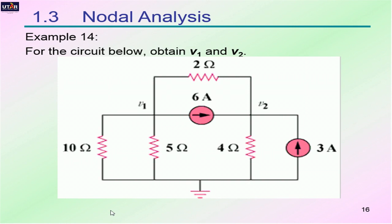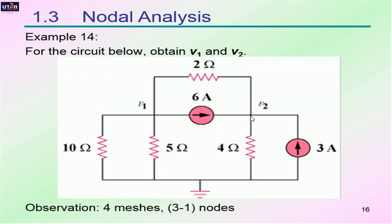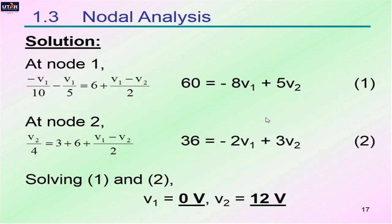Here's another example where we find voltages V1 and V2, which fall on two nodes. With two nodes, we should have two sets of equations. Using KCL, we obtain one set of equations for node 1 and another for node 2. By solving them using either Cramer's rule or the substitution method, we find V1 equals 0 volts and V2 equals 12 volts.